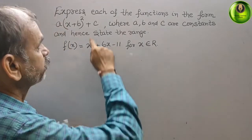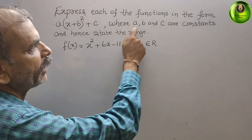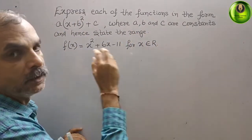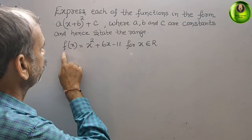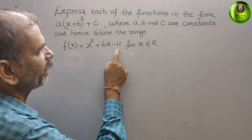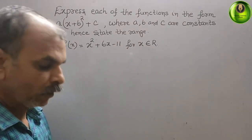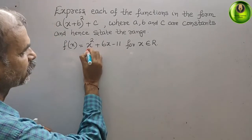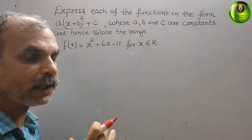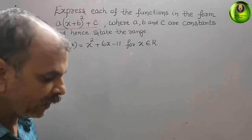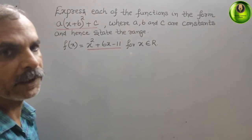The question asks us to express each of the functions in the form a(x + b)² + c, where a, b, and c are constants, and hence state the range. The function given is f(x) = x² + 6x - 11 for x belonging to the real numbers. We first need to convert this into the required format.